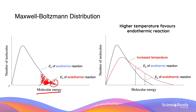For the exothermic reaction, anything with more energy than its activation energy can react, and this is the area shaded underneath the graph. Since the activation energy of the exothermic reaction is lower than the endothermic reaction, a greater proportion of molecules can react in the exothermic reaction. When the temperature of the system is increased, the Boltzmann distribution curve shifts towards the right, such that the average kinetic energy of molecules is increased, while the activation energies of both reactions remain unchanged.